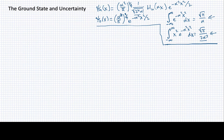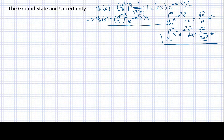We've seen how the uncertainty principle can be expressed in terms of variances over quantum wave functions. Now let's see how that works with the harmonic oscillator states. In particular, we're going to be interested in the uncertainty relationships that we can get from the ground state of the harmonic oscillator.